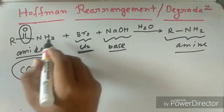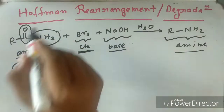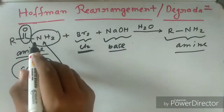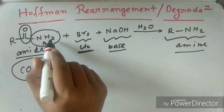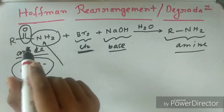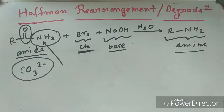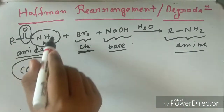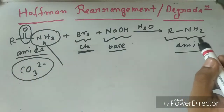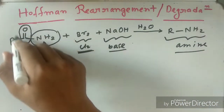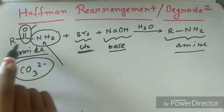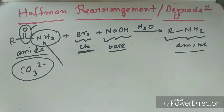This is a primary amide, meaning with nitrogen there should be at least 2 hydrogens attached. If one methyl or other alkyl group is present, then this amide will not participate in Hoffman rearrangement or Hoffman degradation. There should be an NH₂ group, and the product will be R-NH₂ — the amine — as the final product.